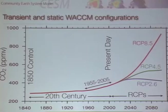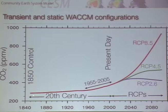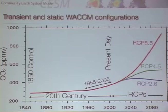What cases do we have available? We've set up the model to run from 1850 all the way up to 2100 under a variety of different scenarios based on the IPCC CMIP5 activity. So you could run the F2000 present-day case, or do a full 20th-century run and extend that into the future.